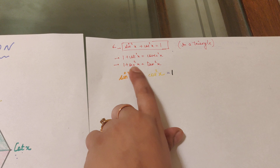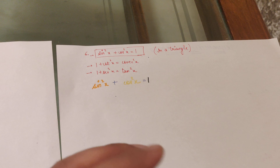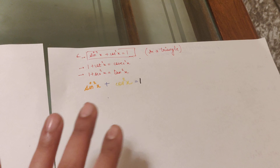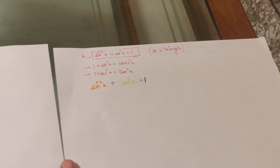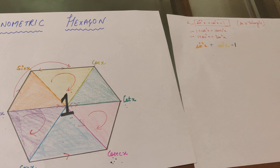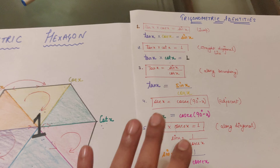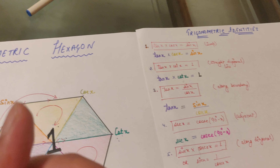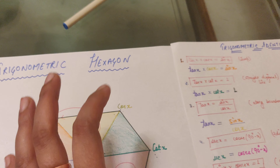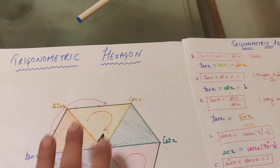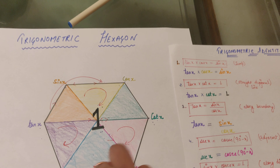Similarly, for the pink triangle starting from the very left: 1 + cot²x = csc²x. And for the third triangle, starting from the very left in a clockwise direction: tan²x + 1 = sec²x. All three Pythagorean identities come from these three triangles.